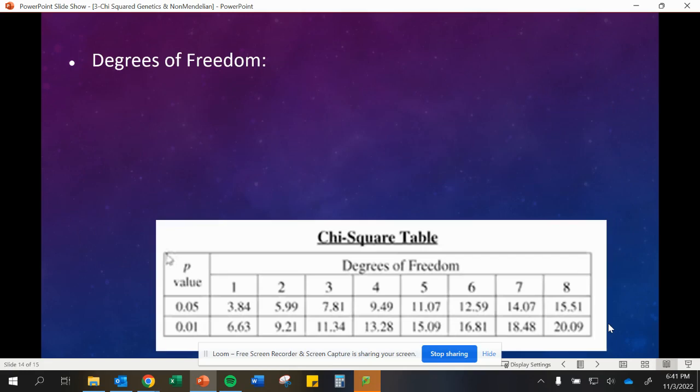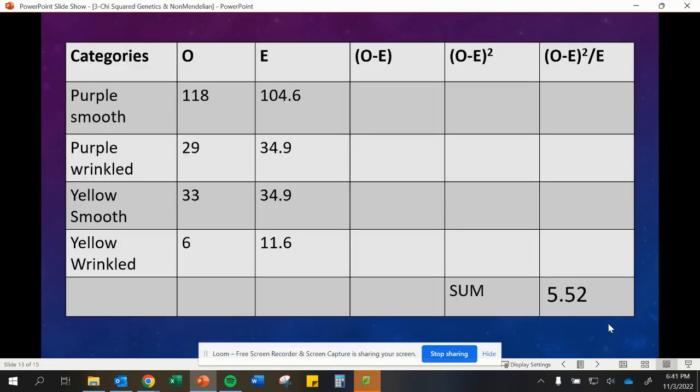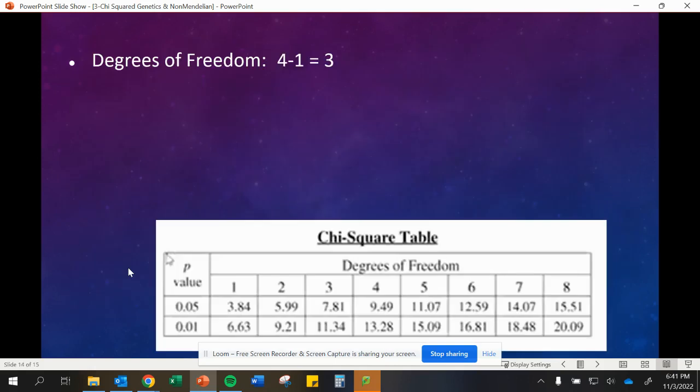Now we're going to compare it to our chart. To find our degrees of freedom, we have four options for our different phenotypes. We had that purple smooth, purple wrinkled, yellow smooth, and yellow wrinkled. That means our degrees of freedom are 3. P-value, remember we always use that 0.05 P-value. We're going to use our critical value of 7.81.